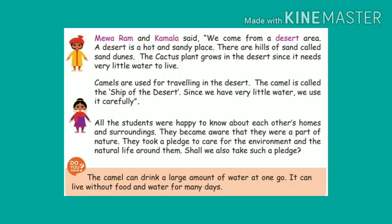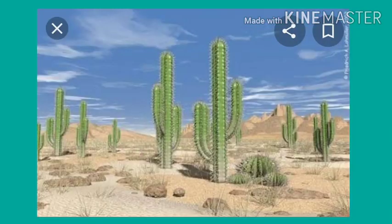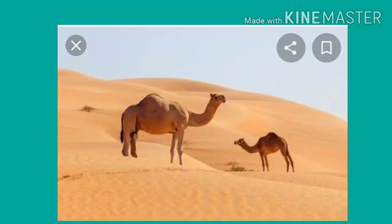A desert is a hot and sandy place. There are hills of sand called sand dunes. Cactus plants grow there. Camels are also found in the desert.